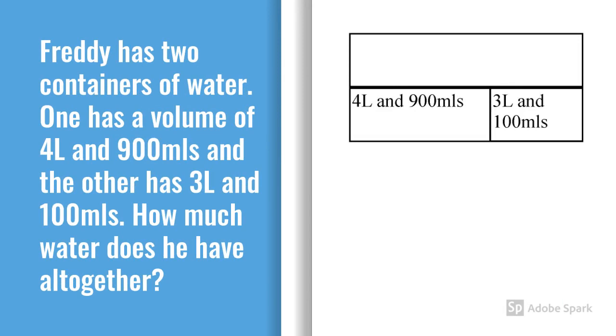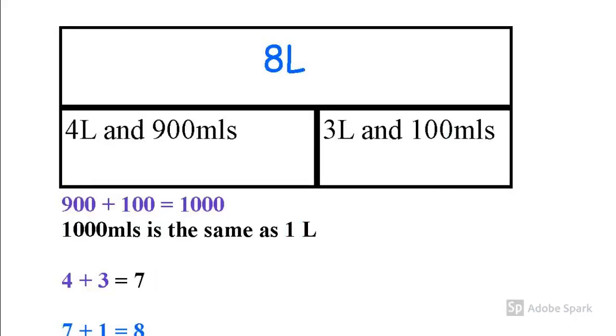Now let's look at a slightly trickier problem. Freddy has two containers of water. One has a volume of 4 litres and 900 millilitres and the other has 3 litres and 100 millilitres. How much water does he have altogether? Again have a go using the bar model to show your answer to this question. Now let's check your answer. I hope you remembered that 1000 millilitres equals 1 litre because when you combine the 900 and 100 of course you get the 1000 making that 1 litre. Then you just needed to look at 4 add 3 equals 7, 7 add the 1 litre is 8 making a total of 8 litres.